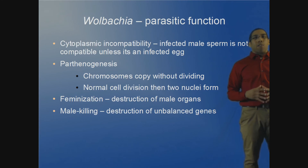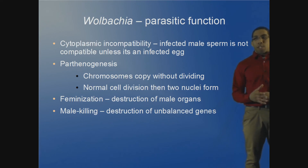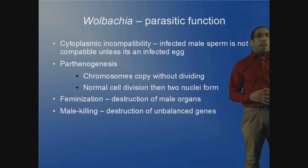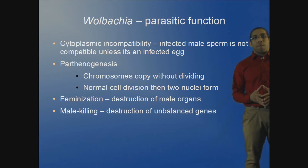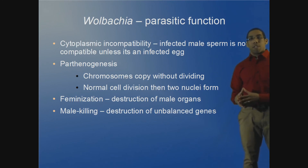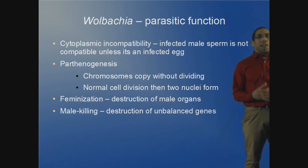The four main mechanisms by which Wolbachia parasitizes its host are: cytoplasmic incompatibility, where infected male sperm is not compatible with an uninfected egg; parthenogenesis, where chromosomes copy but don't divide; feminization, where it destroys the male reproductive organs, preventing reproduction; and male killing, where the male genes inside the egg are killed off.